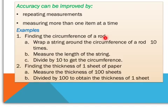First of all, wrap a string around the circumference of a rod ten times. Then measure the length of the string and divide it by ten to give you the circumference. This is an example of repeating measurements.